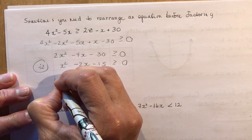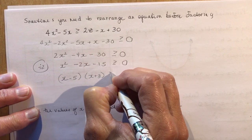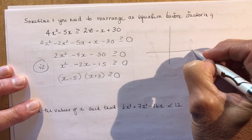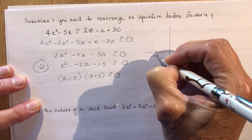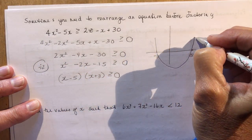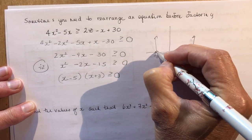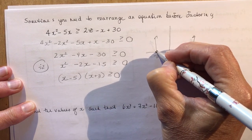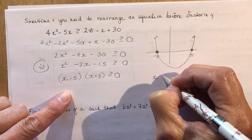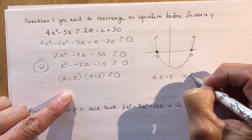I'm looking for two numbers that multiply to −15 and add to −2, which is −5 and +3. So I factor as (x − 5)(x + 3) ≥ 0. This is a concave-up quadratic with zeros at x = 5 and x = −3. Since it's greater than or equal to zero, the solution is x ≤ −3 and x ≥ 5.